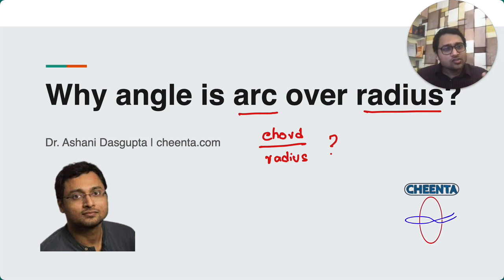If you look into any geometry book, they will give you a definition of an angle as arc over radius. Now we will ask why is it so? Why is it, for example, not chord over radius? What goes wrong? It's a very deep question. It's a simple but deep question that we need to understand.